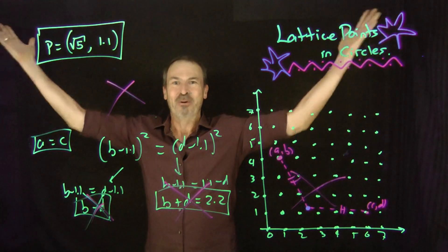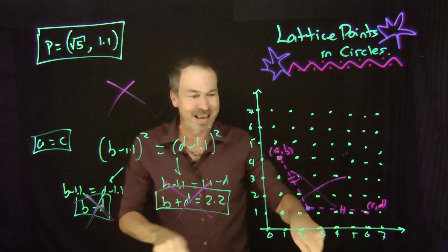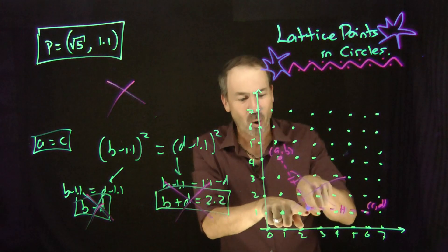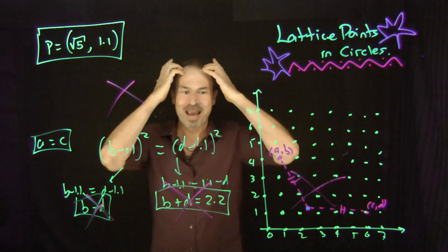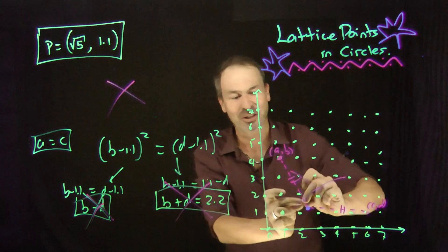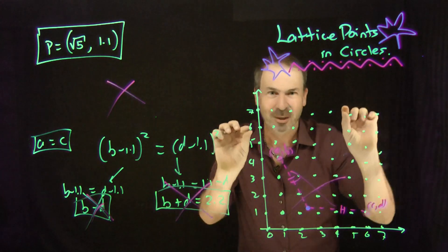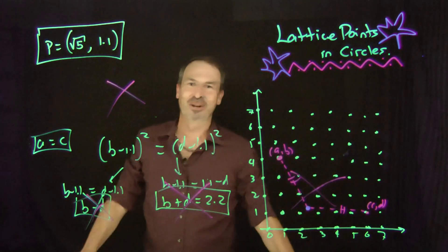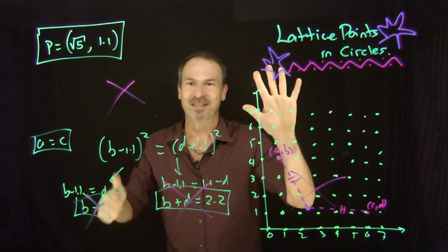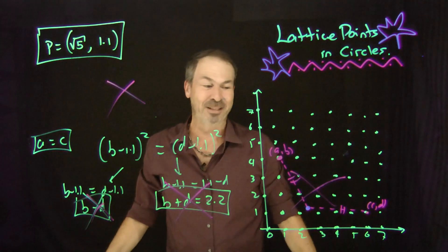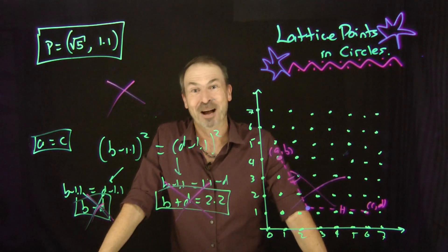Which absolutely does it. I think that is amazing — we can actually pinpoint one point all of whose distances from different lattice points are different values. That's amazing. In which case, just expand circles. Hit them one at a time. Go a little bit bigger, and you'll get circles that contain 0, 1, 2, 3, 4, 5, 6, 7 — all the way through all the counting numbers on their interiors. That's amazing, I love it.